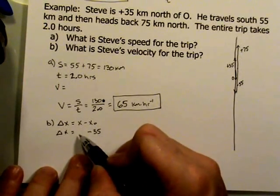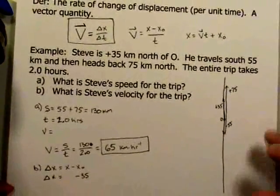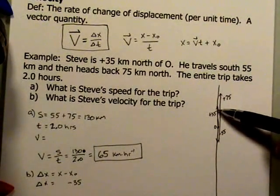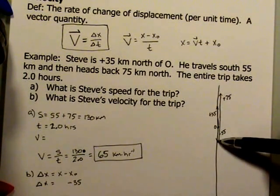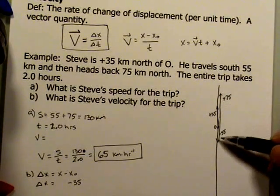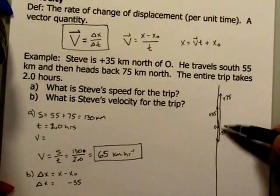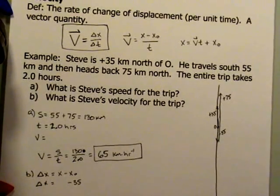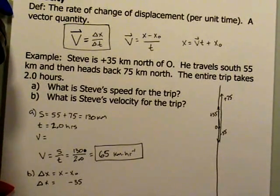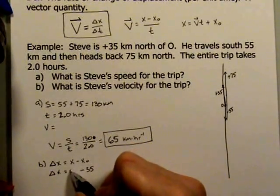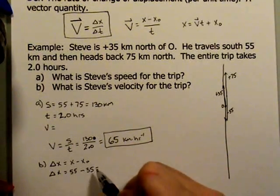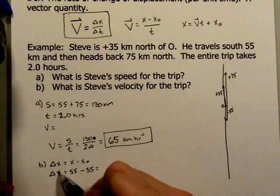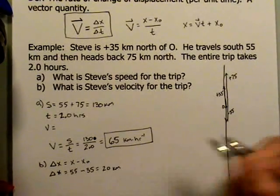What I need to know is where was I in the end. So let's go back and take a look. I started at 35. I went 55 to the south. So at this point, I'm now at negative 20. Then I traveled 75 back to the north. So starting from negative 20 and traveling 75 to the north is going to put me at plus 55. So we can write plus 55 in here. And that gives us a change in displacement of 20 kilometers.